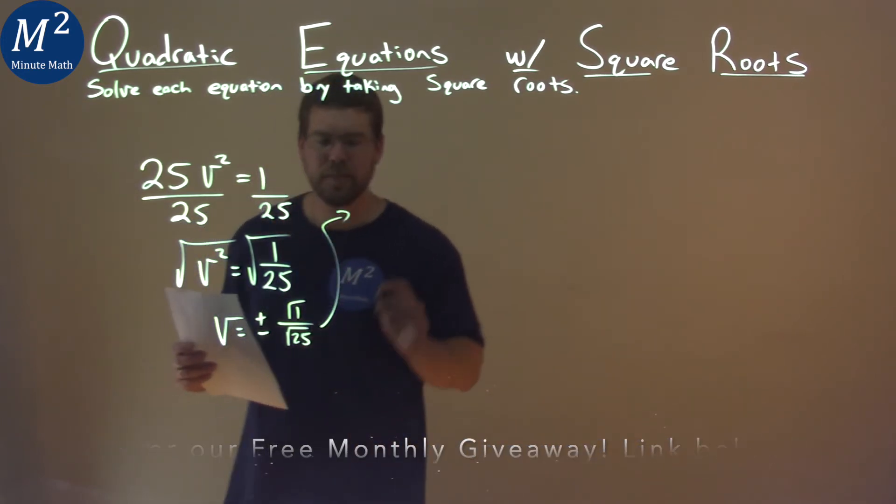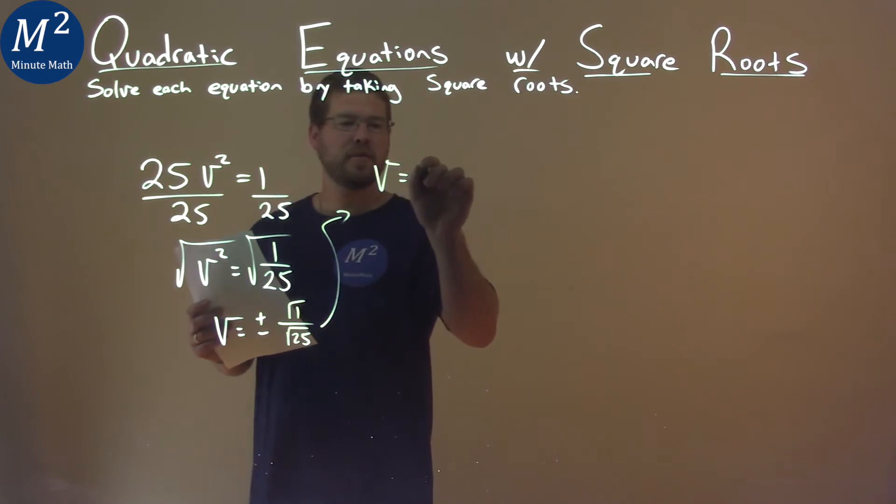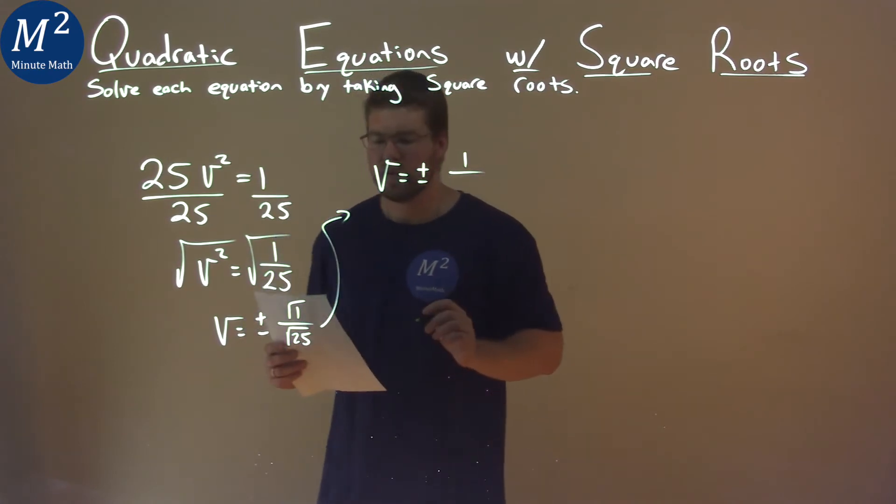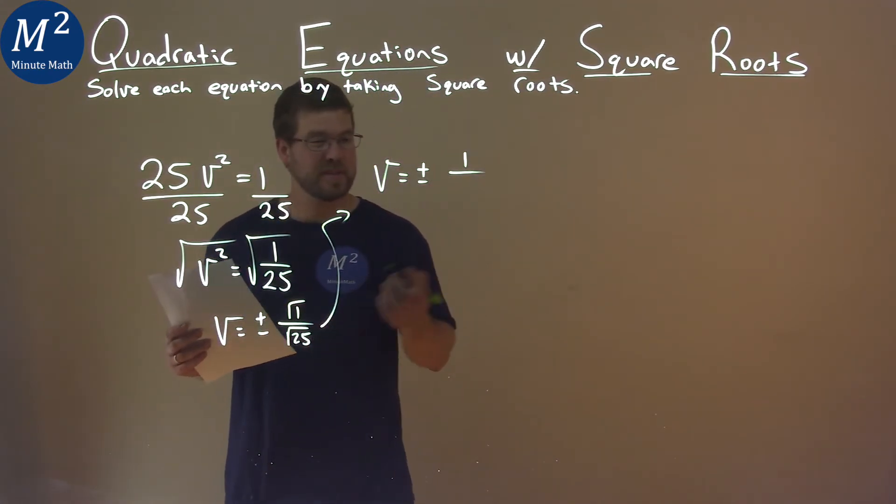Let's simplify that up here. v equals, it's a plus or minus still. Square root of 1 is 1. The square root of 25 is 5.